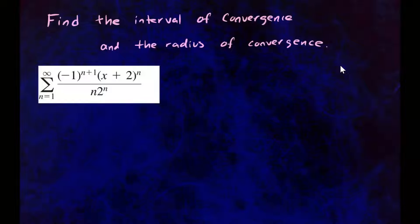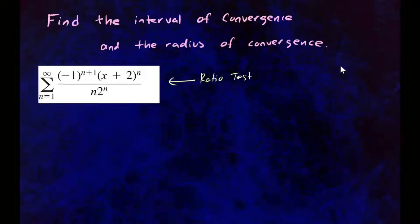Let's go ahead and find the interval of convergence and the radius of convergence for this power series. We're going to be using the ratio test, because it's a quick way of finding the interval of convergence. You could use the root test, but the ratio test is what I prefer to do.